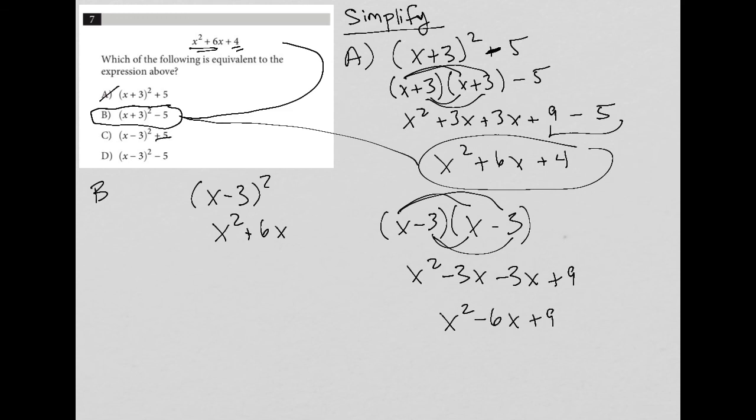So even if I add 5 to that 9 and get a 14, which I know I do not want, or if I subtract 5 from that 9 and get a positive 4, which I do want, the problem for choice D would be that it's x squared minus 6x instead of x squared plus 6x. So that's the reason why choice B is the best answer here.